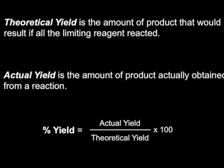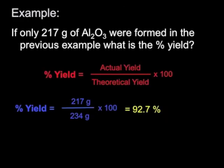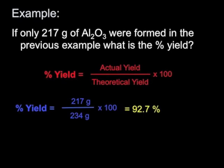Going back to the aluminum oxide example: if we only formed 217 grams of aluminum oxide in the lab, what is the percent yield? Actual yield = 217 g, theoretical yield = 234 g. So 217 ÷ 234 × 100 gives a percent yield of 92.7% — a pretty good yield.